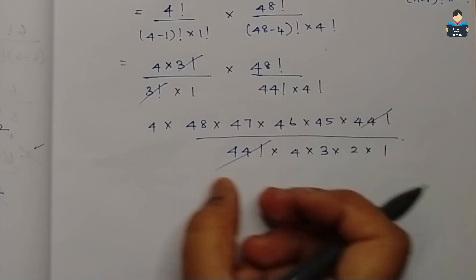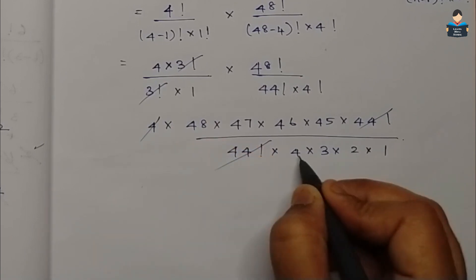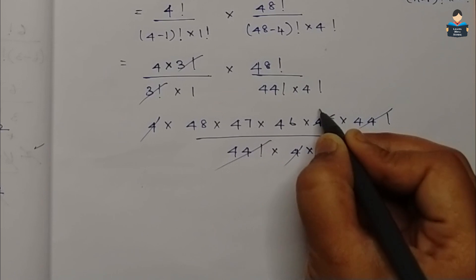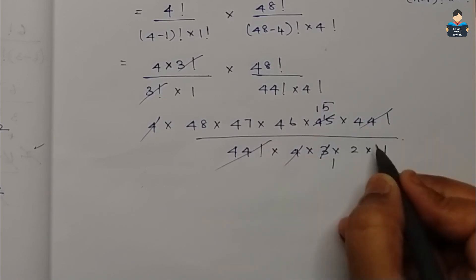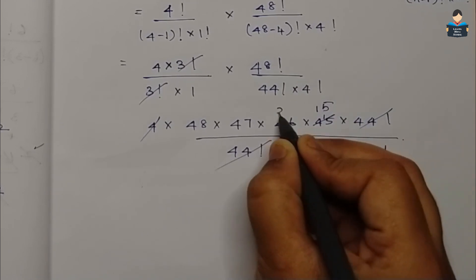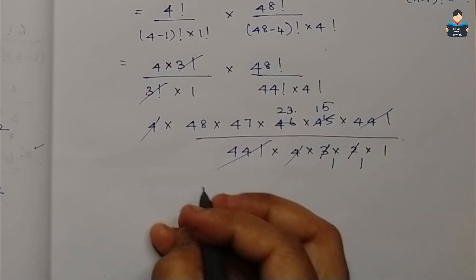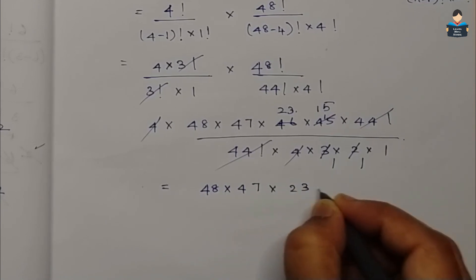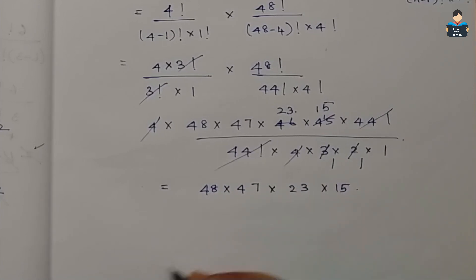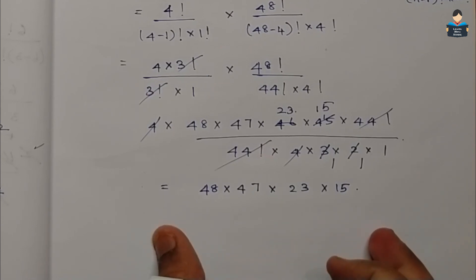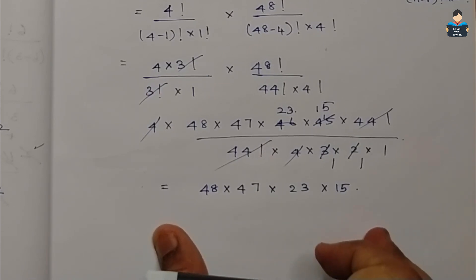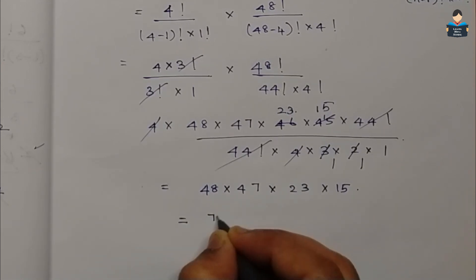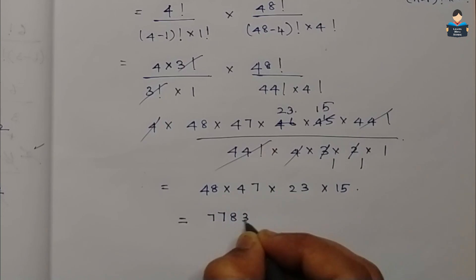Now we simplify: 4 and 4 cancel. 3 goes into 48 fifteen times, 2 goes into 46 twenty-three times. Remaining is 48 into 47 into 23 into 15. Multiplying these gives the final answer: 7,78,320.